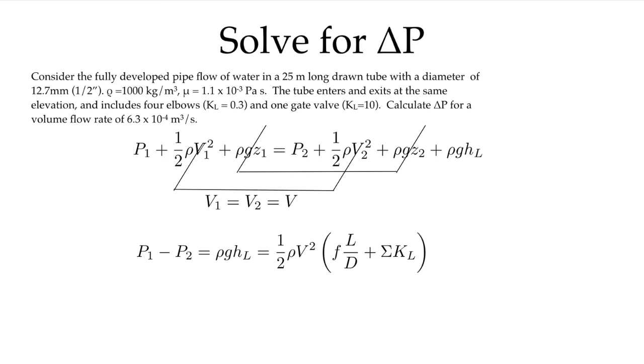It's the same as before except now I'm calling it a drawn tube with a diameter of 12.7 millimeters, which is close to half an inch. It's water, so a density of 1000 kg/m³ and a viscosity of 1.1×10⁻³ pascal seconds.